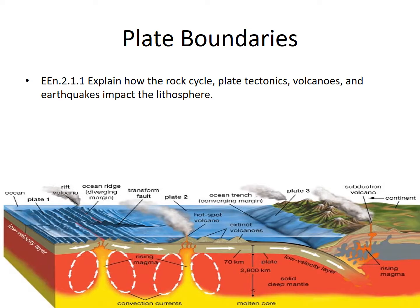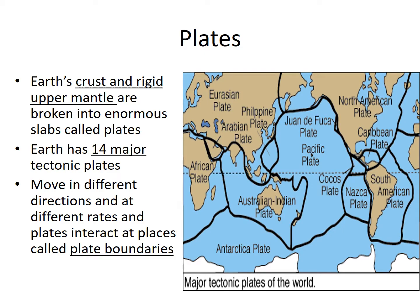So let's go ahead and get started. What are plates? Earth's upper crust, the rigid upper mantle, is broken into these enormous plates, and the Earth has 14 major tectonic plates. These plates move in different directions at different rates and speeds, and they interact at places called plate boundaries. Here's a lovely image of the plates as we know of them right now.